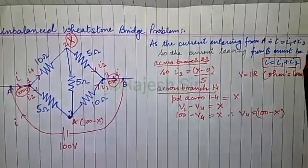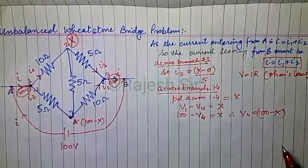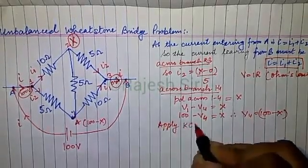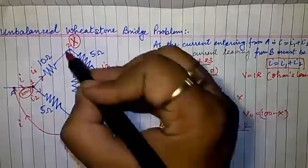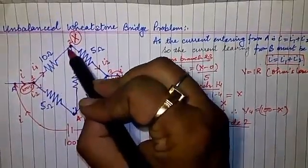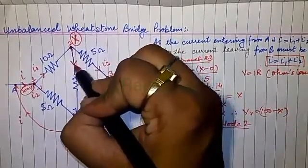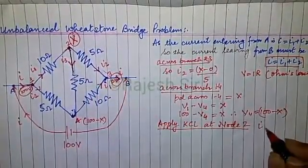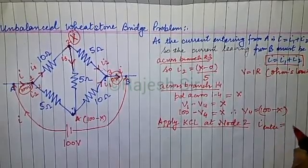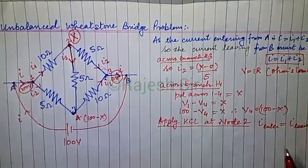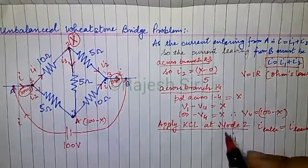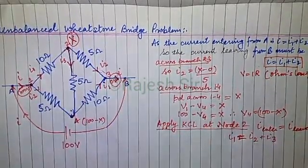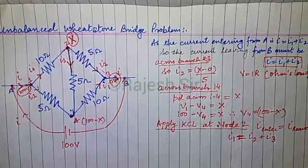Knowing all the node voltages, I apply Kirchhoff's Current Law at node 2. Current i1 enters node 2, while currents i2 and i3 leave it. By KCL, the current entering equals the current leaving: i1 = i2 + i3. If you are not familiar with Kirchhoff's Current Law and Voltage Law, you can watch my video linked in the description.